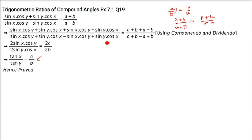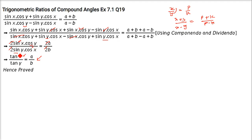When we apply componendo and dividendo, adding numerator and denominator: sin(y)·cos(x) terms cancel, giving 2·sin(x)·cos(y). When we subtract, sin(x)·cos(y) terms cancel, giving 2·sin(y)·cos(x). Now cancel the 2s. sin(x)/cos(x) is tan(x), and cos(y)/sin(y) brought down gives sin(y)/cos(y) = tan(y). So this is proved.